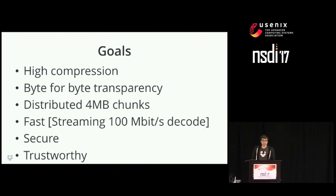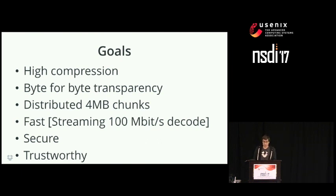I'll talk a little bit about some of the goals of our work. We're not doing ordinary lossless image compression — we're actually doing byte-for-byte transparency of our image. Dropbox is actually a file system, so users expect the images to be bit-for-bit exact. They expect any interesting facet they put in the JPEG to actually be there, even if the JPEG doesn't comply with the JPEG standard.